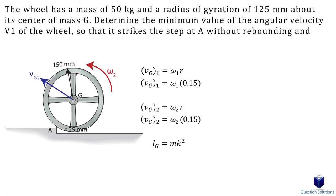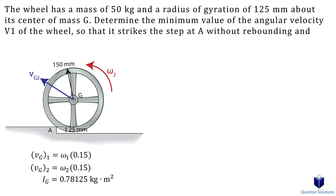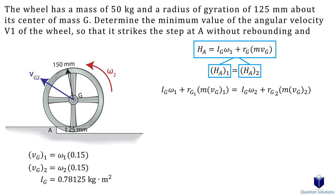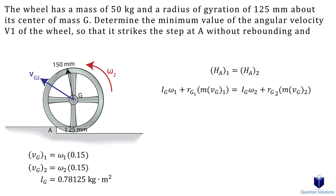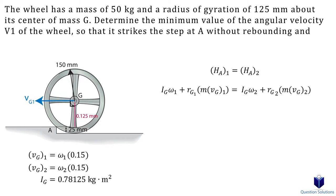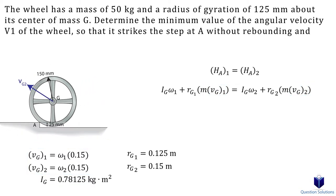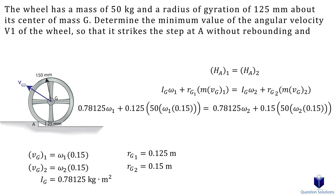Now we can write our conservation of angular momentum equation about point A. Since this equation is not about the center of mass, we need to use the expanded form of the angular momentum equation. We also need to find the perpendicular distance from point A to the mass times velocity vector, represented by r. Initially, the distance is 150 mm minus 25 mm, so that's 0.125 m. For the second distance, it's the radius of the circle. We can replace the velocities with the expressions we found, giving us an equation with just angular velocity. Let's plug in all values and simplify.